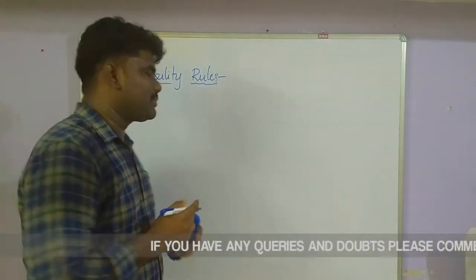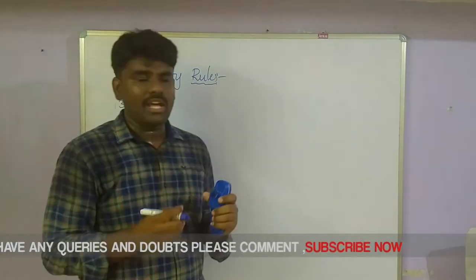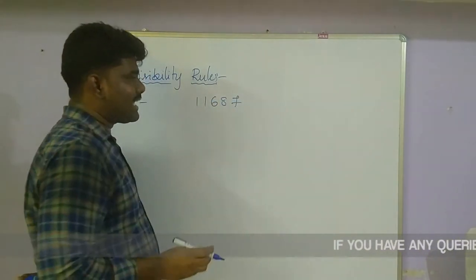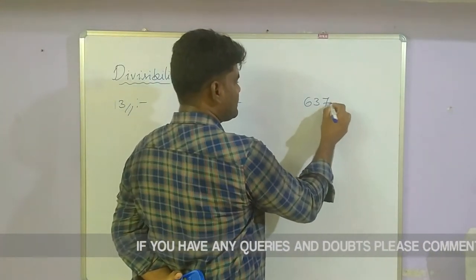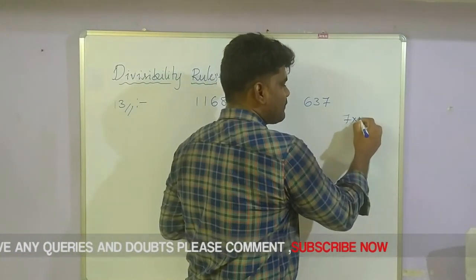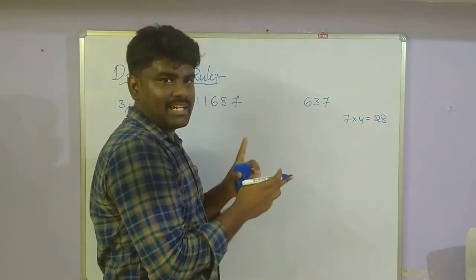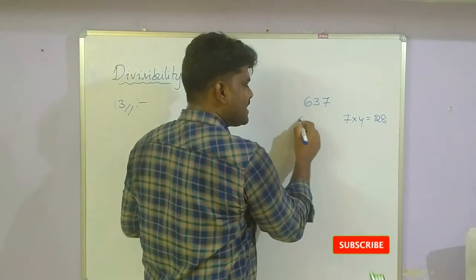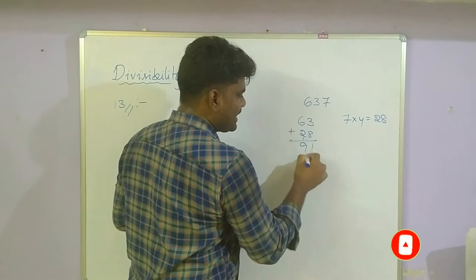Now we are entering into the 13 divisibility rule. Let us take the number 637. Take the units place: 7 × 4 = 28. 28 is added to the remaining digits. The remaining is 63, so 63 + 28 = 91. Wait — let us take a smaller step: take units digit 7, multiply by 4 to get 28, add to 63 to check if divisible by 13.